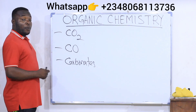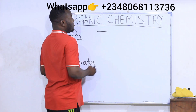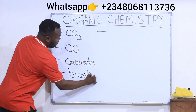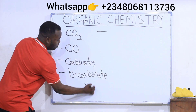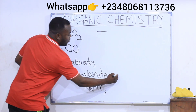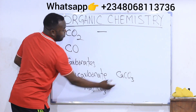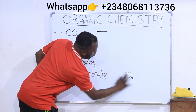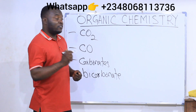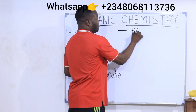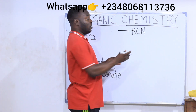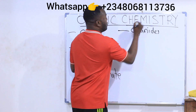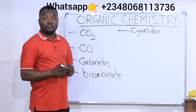The other compounds of carbon that are not included are the bicarbonates. The bicarbonates are not included as well, like sodium bicarbonate. This is a bicarbonate, while calcium carbonate is a carbonate. So they are not included. Also, we don't include cyanides like potassium cyanide and so many other cyanides. Cyanides are not included, though they are compounds of carbon. They are not included in the study of organic chemistry.